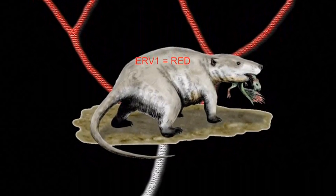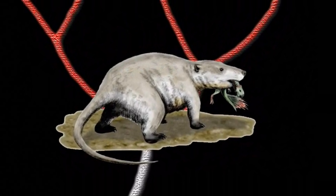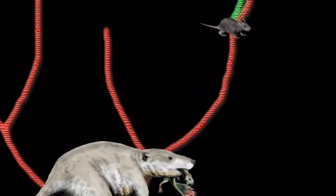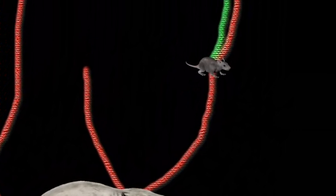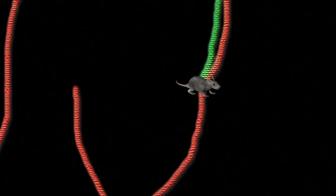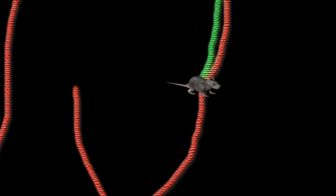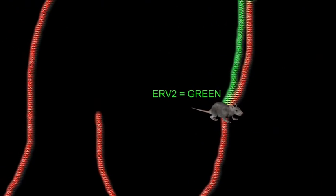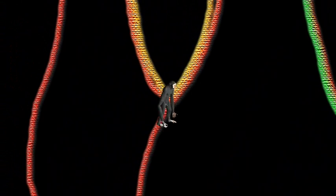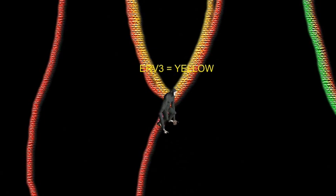Fast forward 30 million years. Different lineages have evolved from the original common ancestor, and there are now many different types of mammals in existence, all carrying ERV-1. A small rodent, let's call it Secundus mausus, is the common ancestor of mice and rats, and is infected by a new species-specific retrovirus that becomes endogenous — this is ERV-2. In a different line, Secundus apis, the common ancestor of all great apes, acquires a third retrovirus, ERV-3.